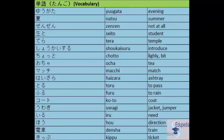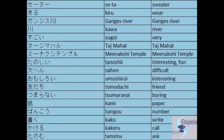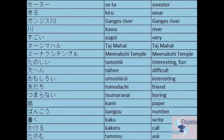'Ho' — direction. 'Densha' — train. 'Kippu' — ticket. 'Seta' — sweater. 'Kiru' — to wear. 'Ganges-gawa' — Ganges River. 'Kawa' means river. 'Sugoi' — very.